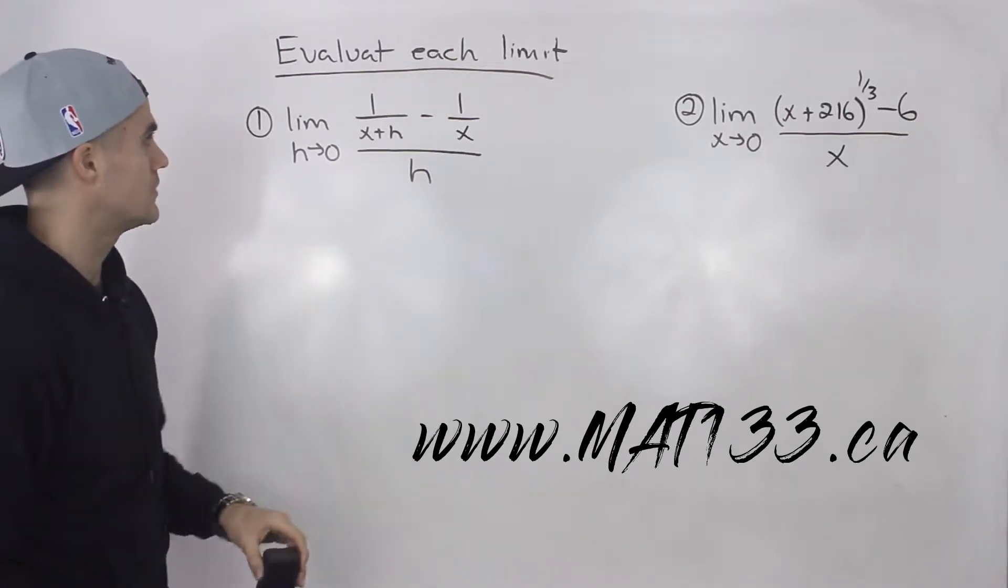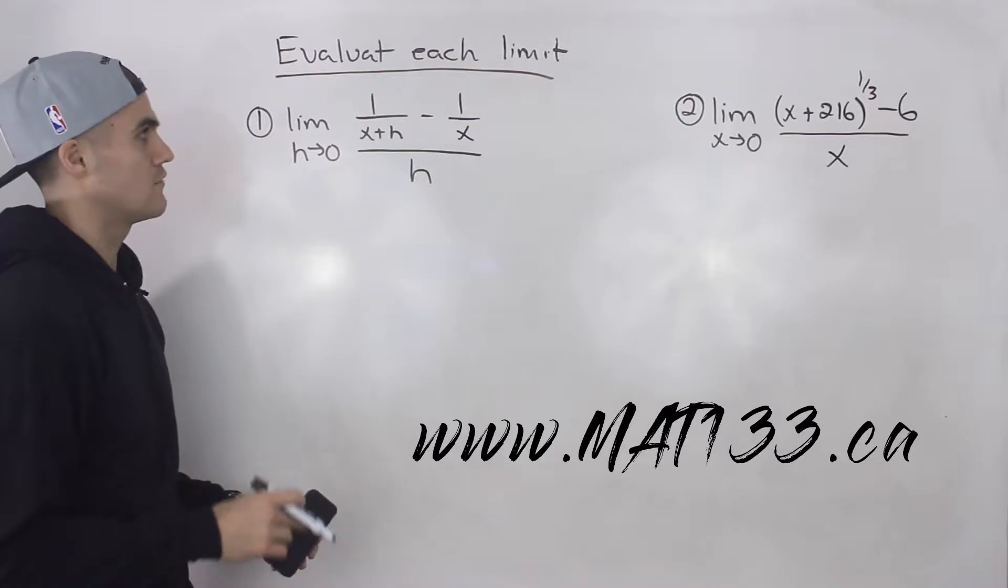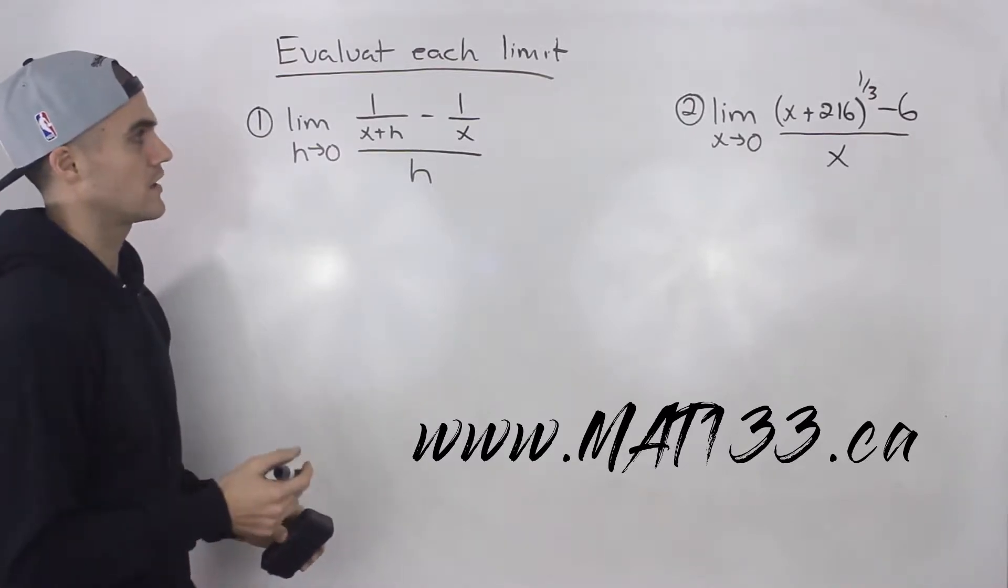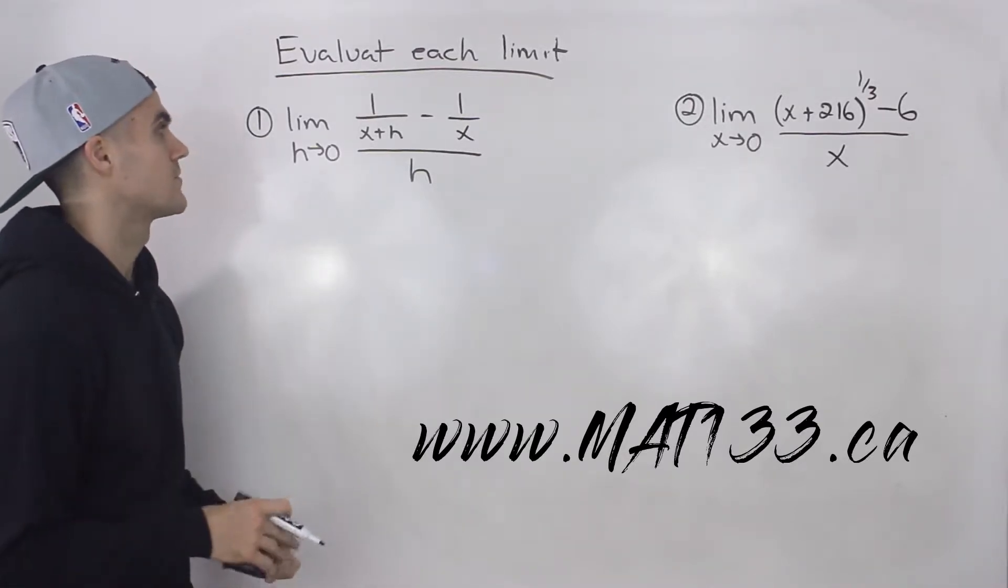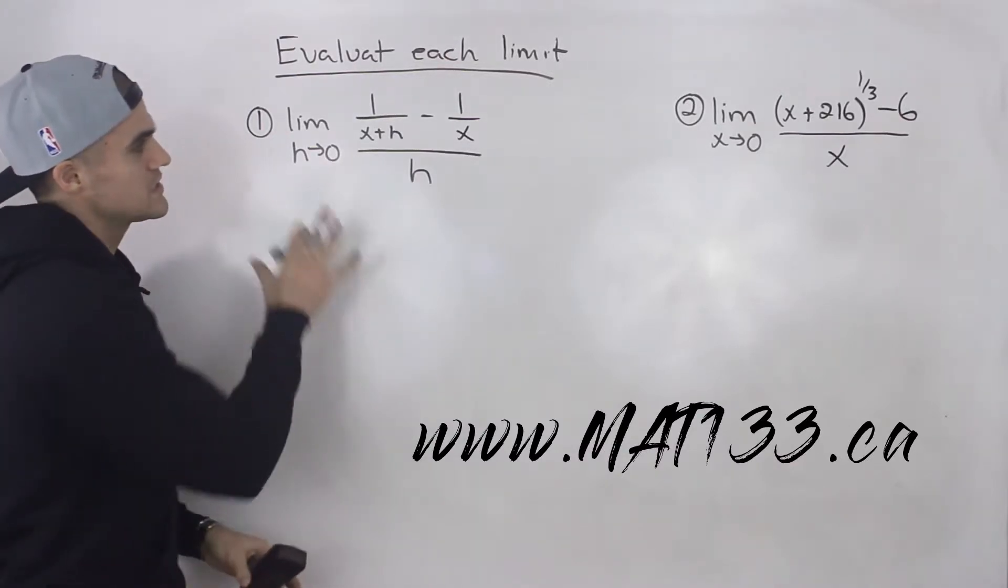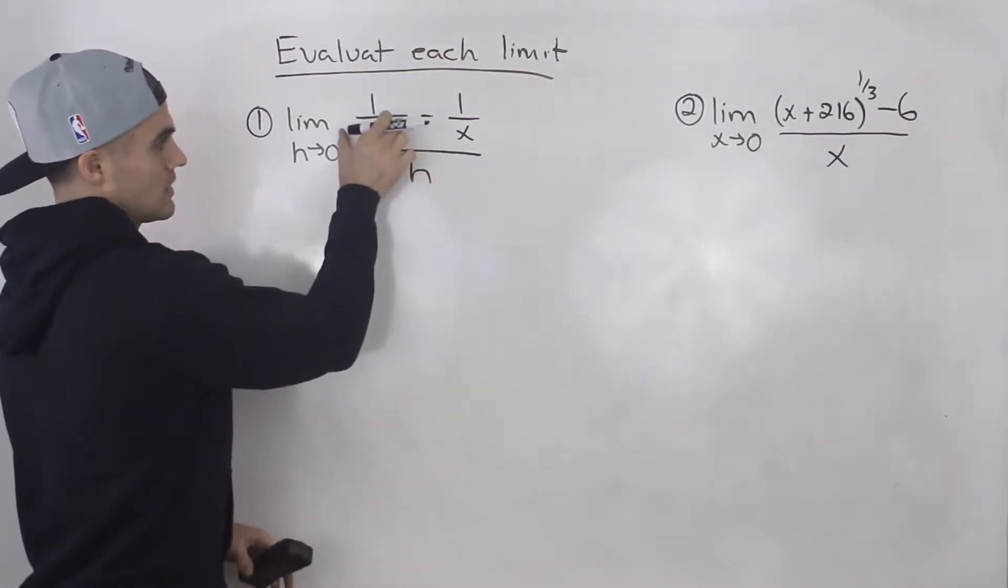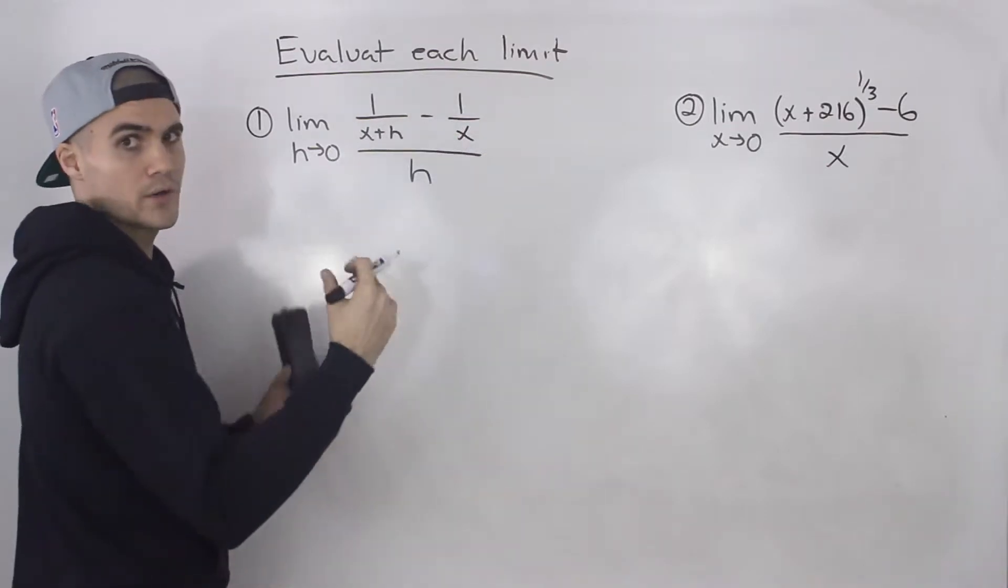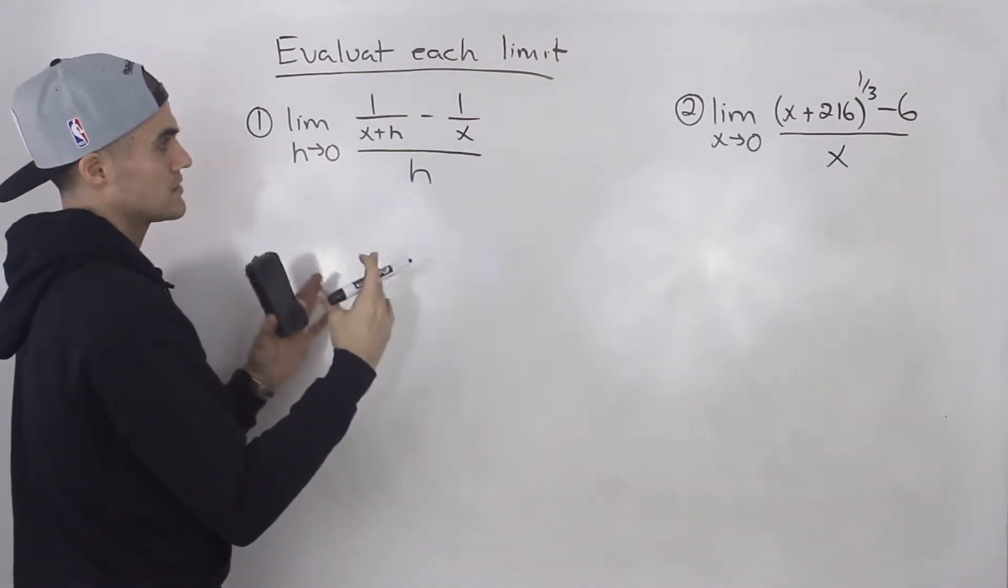Starting off with this first one, limit as h approaches 0 of 1 over x plus h minus 1 over x all over h. This one is pretty tricky, pretty unique. Whenever you see something like this and you got these fractions here, almost always you're going to have to make them into one fraction.